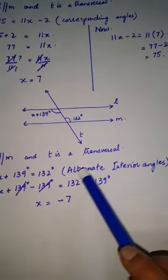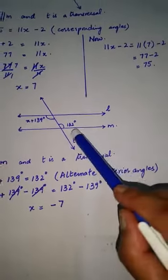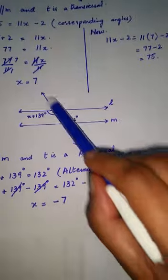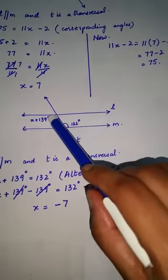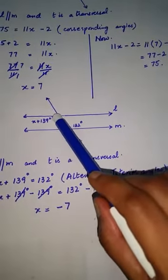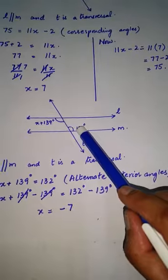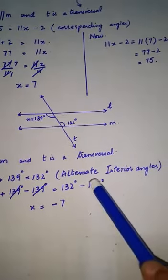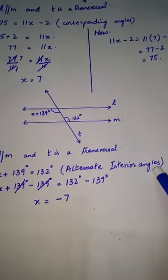132. These are interior angles because they are on the inside part of the transversal, but as they are on opposite sides of the transversal, they are called alternate interior angles. Next,